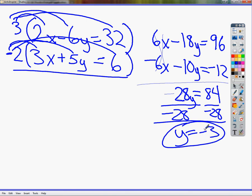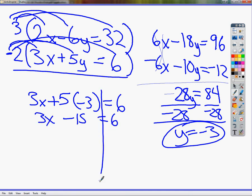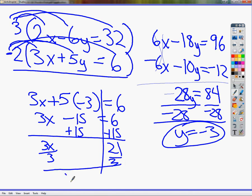Now to get x I just go back into either one of the original equations. Let's go back into this one. And plug in that y value. Draw the line there. Add 15 to both sides. Divide by 3. And you get 7. So your answer is 7 and negative 3. So that's another way you can do it.